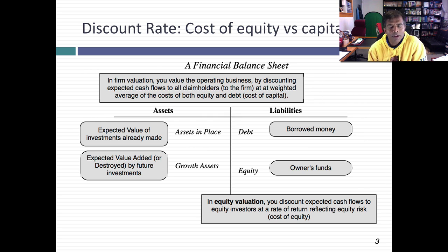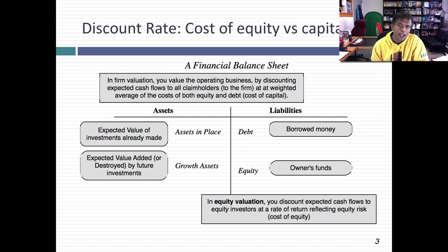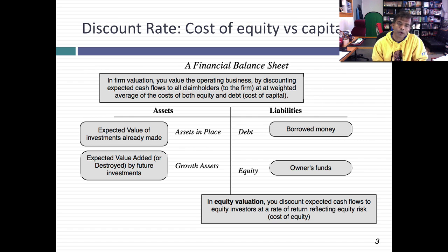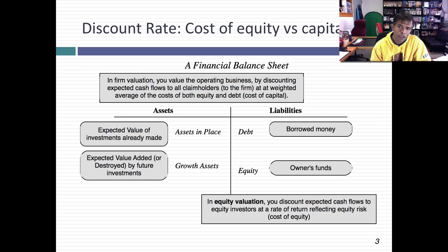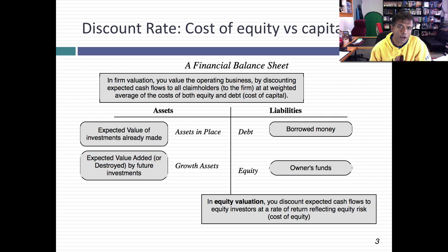I like to use a concept called the financial balance sheet to frame the way we think about discount rates and cash flows. On the asset side, I break down the assets of a company into investments it's already made and growth assets — investments I expect you to make in the future. And on the liability side of the balance sheet, I've got debt and equity.